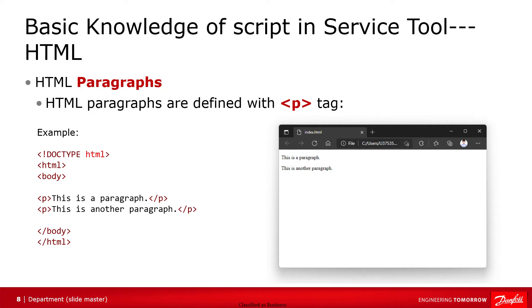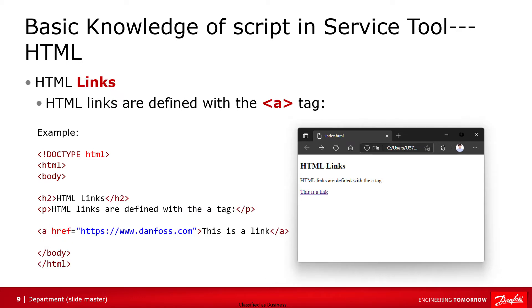The HTML p tag defines a paragraph. A paragraph always starts on a new line, and browsers automatically add some white space before and after a paragraph. Here is a very simple example — we use the p tag to define two paragraphs in the body of the HTML document. The HTML a tag defines a hyperlink. Here is an example. We use the a tag to define a hyperlink. The link's destination is Danf's website, and the link text is 'this is a link'.